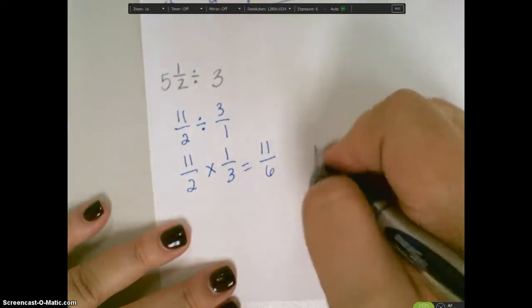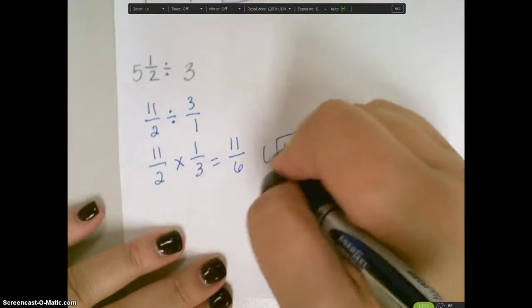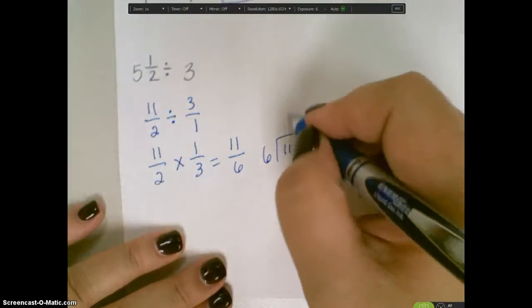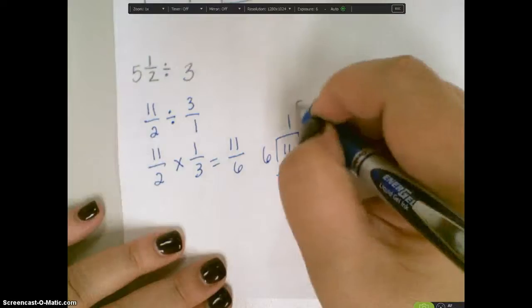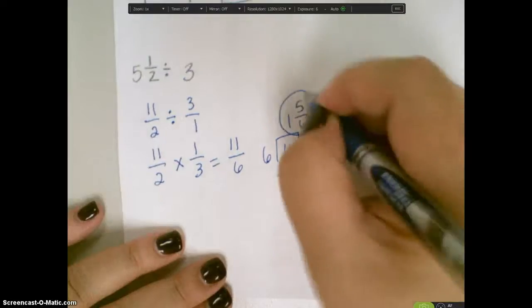And when I simplify that and divide 6 into 11, 6 goes into 11 one time. I get a remainder of 5, so 1 and 5/6 will be my final answer.